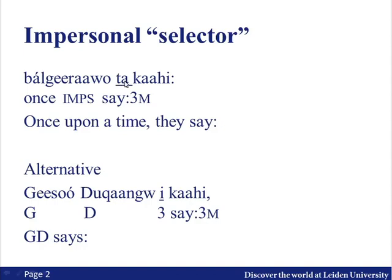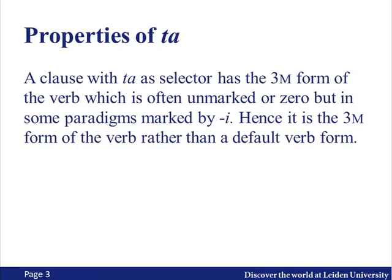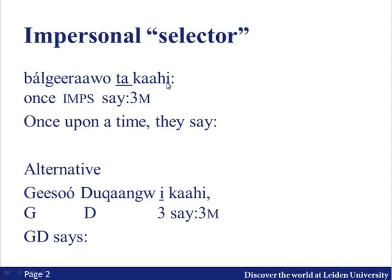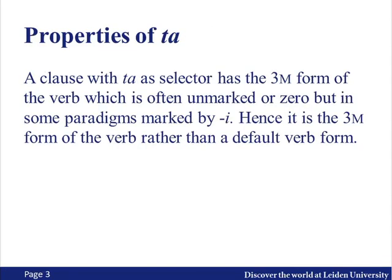Instead of 'ta' at this position, we could have used 'e,' and we would certainly use 'e' as a third-person marker in the selector if the subject were a famous protagonist in the story. But 'one day it — people say it was sad' — then we can use the 'ta.' Some basic properties of this 'ta' as a selector: the verb has the third-person masculine form. The third-person masculine form of the verb is often unmarked as zero, but in some paradigms it's marked by 'e.' So in this example, the final 'e' marks third-person masculine rather than just a default verb form.